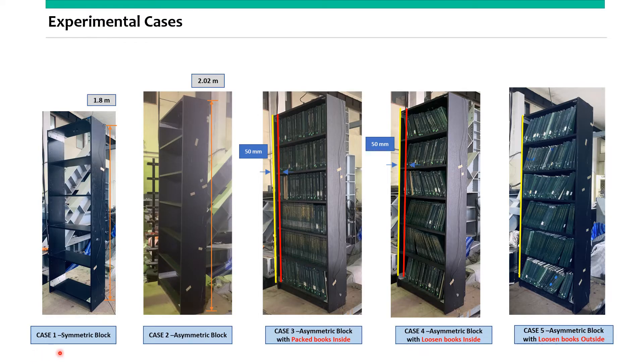In the experimental study, we considered five different cases. This one is a symmetrical bookshelf and this one is an asymmetrical bookshelf. These three are different arrangements of the books inside the bookshelf.